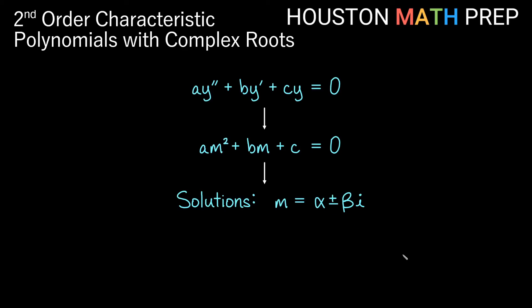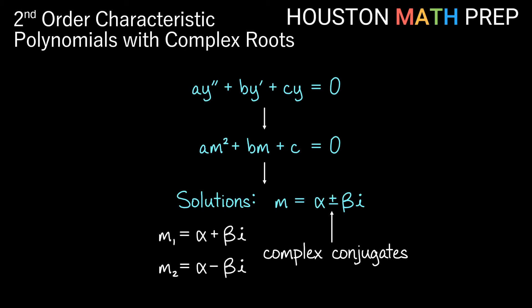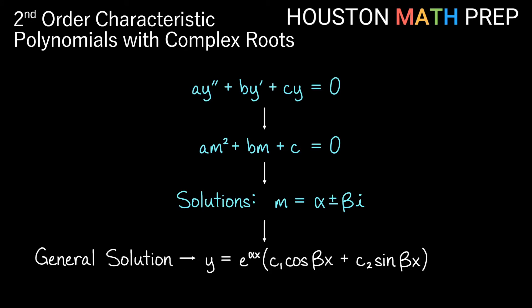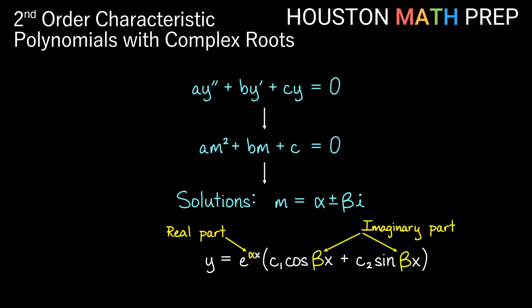In this video about complex roots, if we get solutions for m that are complex numbers, since we already used a and b in the original equation, we'll use alpha and beta instead. So m equals some alpha plus or minus some beta i. When we solve a quadratic equation and get complex solutions, those solutions will be complex conjugates — the same real and imaginary parts, just with plus or minus in between. Generally we don't want complex numbers in our solutions, so we write the general solution as y equals e to the alpha x times the quantity c1 cosine beta x plus c2 sine beta x. We'll work a few examples first and then show where this form comes from.